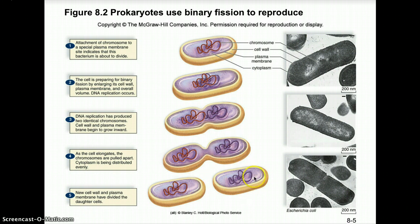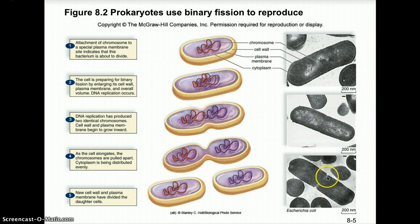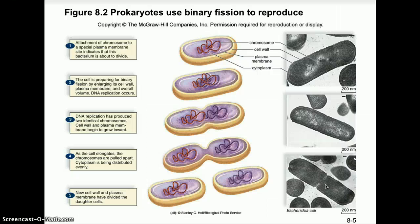Here are examples in Escherichia coli. The original cell is at 200 nanometers; you can start to see the pinching inward of the cytoplasm — that cytoplasm division is called cytokinesis — and eventually two new daughter E. coli cells stem from one parental cell. In optimal conditions, E. coli can double every 20 minutes, so it's an exponential growth rate.